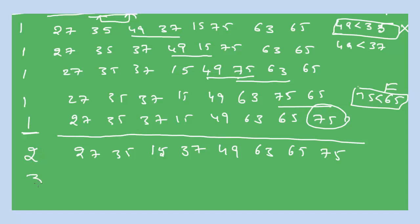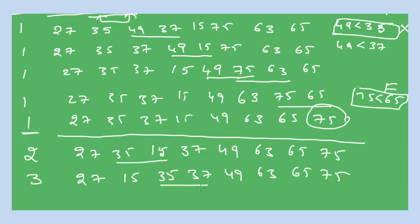In the third pass, compare a[0] and a[1] — condition is true. Compare a[1] and a[2] — condition is false, so swap 27 and 15. Array becomes: 15, 27, 35, 37, 49, 63, 65, 75. Compare 35 and 37 — true. Compare 37 and 49 — true. Compare 49 and 63 — true. Compare 63 and 65 — true. Compare 65 and 75 — true.